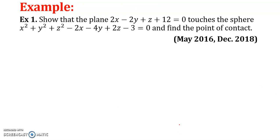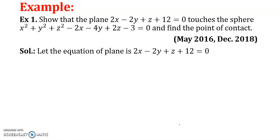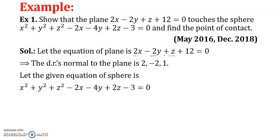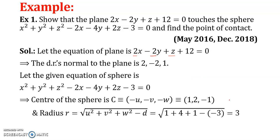Let us consider one example. Show that the plane 2x − 2y + z + 12 = 0 touches the sphere x² + y² + z² − 2x − 4y + 2z − 3 = 0, and also find the point of contact. This question was asked in Savitribai Phule Pune University exam in May 2016 and December 2018. From the equation of the plane, the direction ratios are (2, −2, 1). From the equation of the sphere, the center is (1, 2, −1) and the radius is 3.